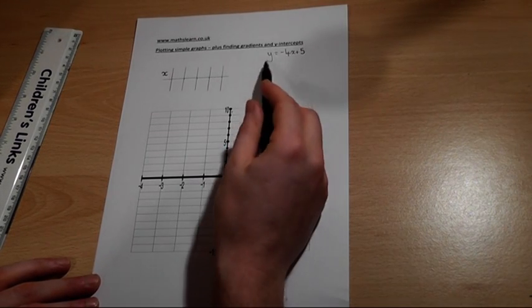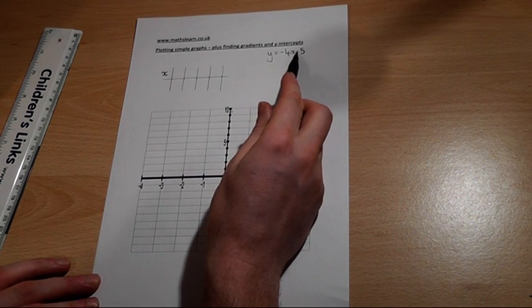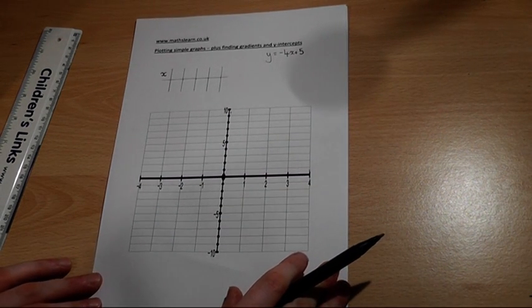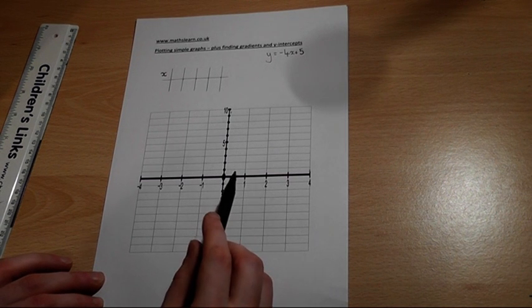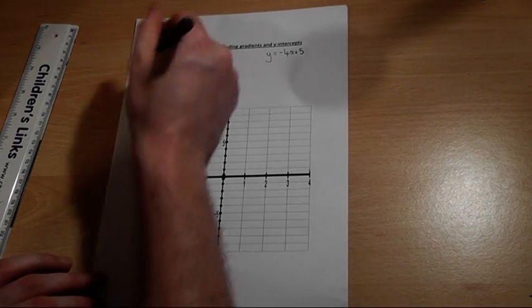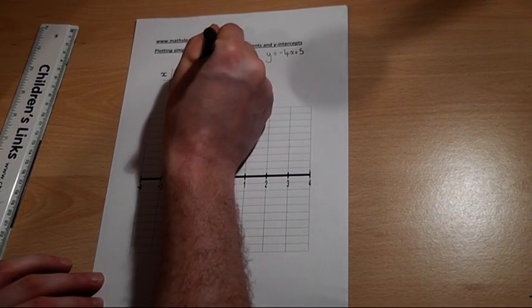Suppose I want to plot y equals minus 4x plus 5. The best way to do this, as always, is to pick 3 or 4 coordinates: 0, 1, 2 and 3, which I'll write into a table.